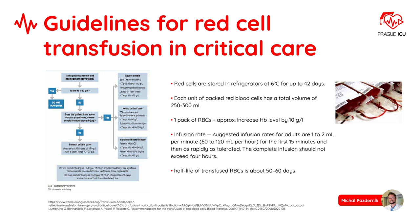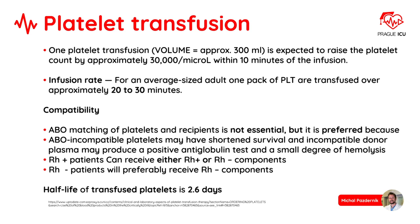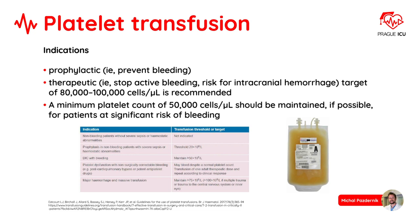On the left side, you can appreciate a stepwise approach on how to decide when is the best time to give a blood transfusion. One platelet transfusion volume is approximately 300 ml and is expected to raise the platelet count by approximately 30,000 per microliter within 10 minutes of infusion. For an average-sized adult, one pack of platelets is transfused over approximately 20 to 30 minutes. ABO matching of platelets and recipients is not essential but is preferred. Half-life of transfused platelets is 2.6 days. Indications for platelet transfusion and transfusion thresholds or targets are summarized in the table.